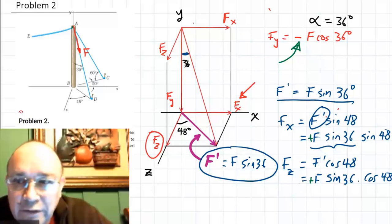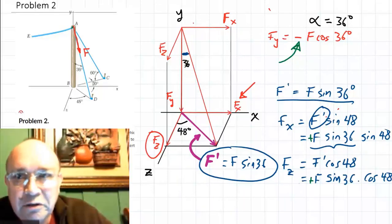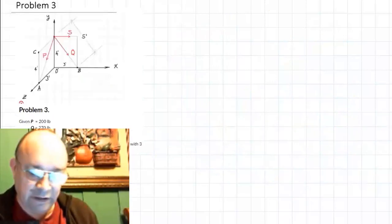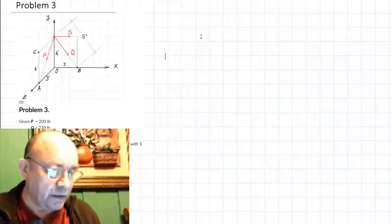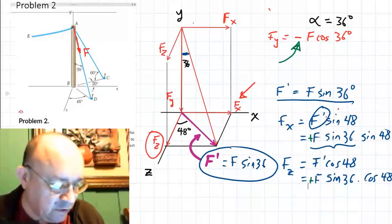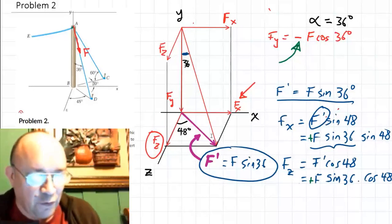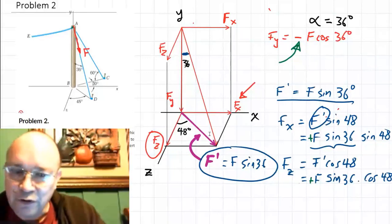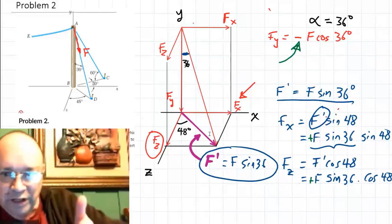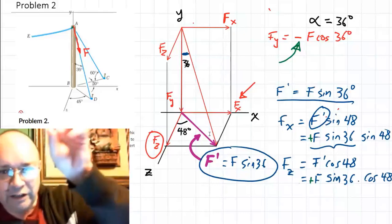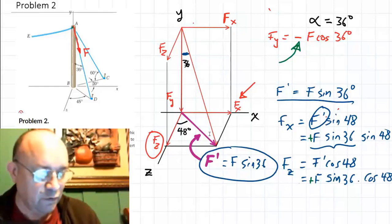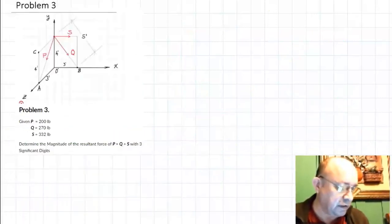No questions? In problem two you only needed the components of force F, so once you have them you're done. But if you needed the resultant of this force plus others, you'd add all x, y, and z components to get the rectangular components of the final resultant. In this case it was simple — just find the components of F. Let's go to problem three.